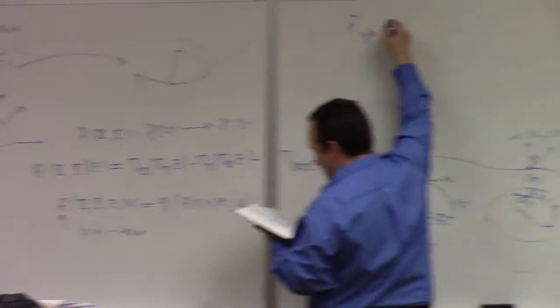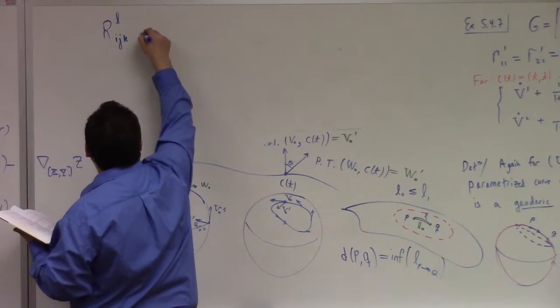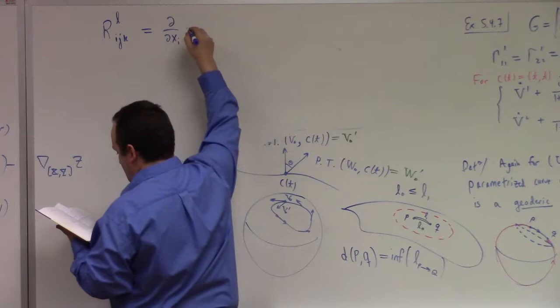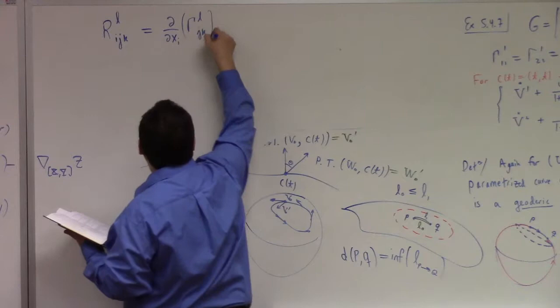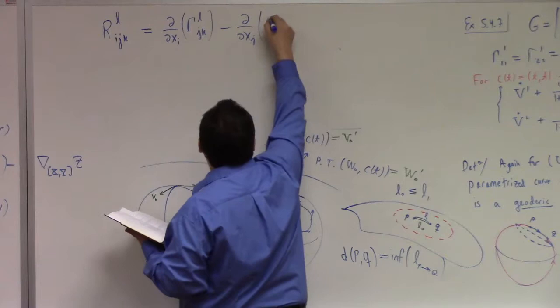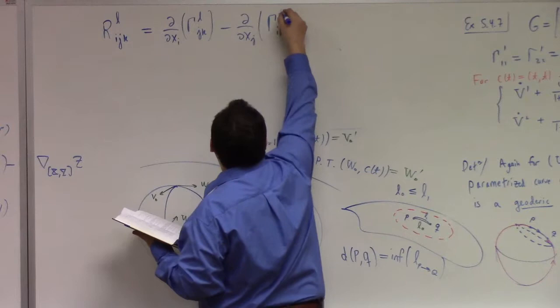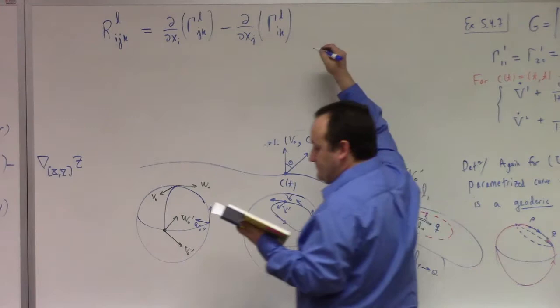Of that proposition that we used to calculate the connection coefficients last time. But this is for R lower ijk upper L, it's equal to the partial derivative with respect to xi of gamma lower jk upper L minus the partial derivative with respect to xi of gamma lower ijk upper L. There is a conservation of indices here, the L is always up.